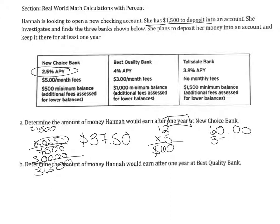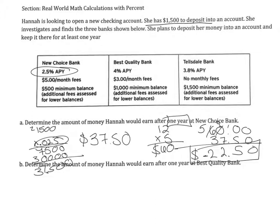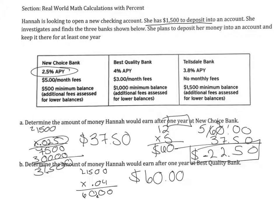Since she spends more in fees ($60) than she earns from APY ($37.50), we subtract to find she would be at negative $22.50 — she owes this amount. Next, determine the amount she would earn after one year at Best Quality Bank. This time the APY is 4%, so $1,500 × 0.04. Working that out, she earns $60 in APY. She also has $3 monthly fees, so 12 × $3 = $36 in fees. Subtracting gives us a positive $24.